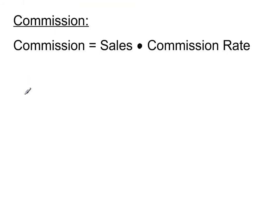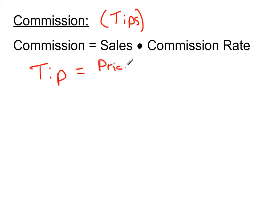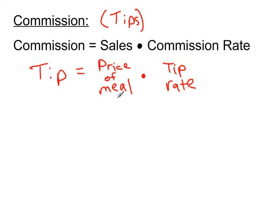Next is commission. The formula is: commission equals sales times commission rate. Commission is similar to tips in waitressing — the tip equals the price of the meal times the tip rate, usually 15% or 20%. You take a percent of the meal price and add it to what you paid. Commission works the same way.